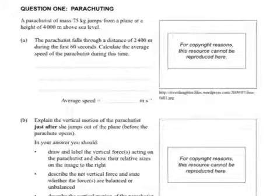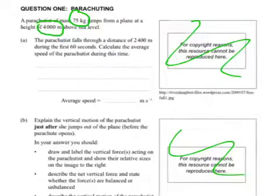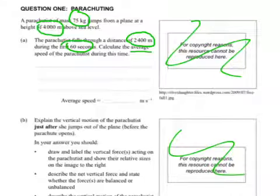So question one is about parachuting. Very exciting, and unfortunately we've lost these pictures here due to copyright reasons, but I'm sure your imagination is fantastic enough that you can work this out. Pictures are usually only for context. A parachutist of mass 75 kg jumps from a plane at a height of 4000 m, that's 4 km above sea level. The parachutist falls through a distance of 2400 m during the first 60 seconds. Calculate the average speed of the parachutist during this time.